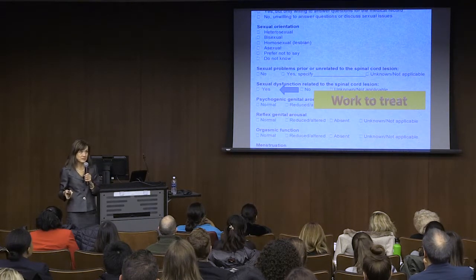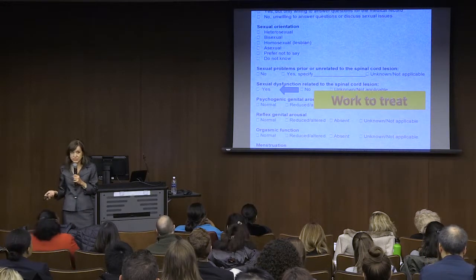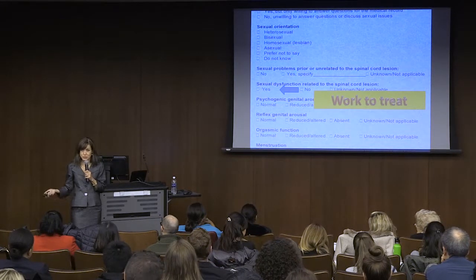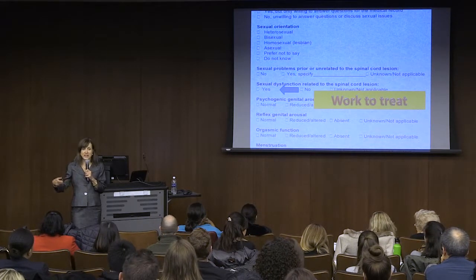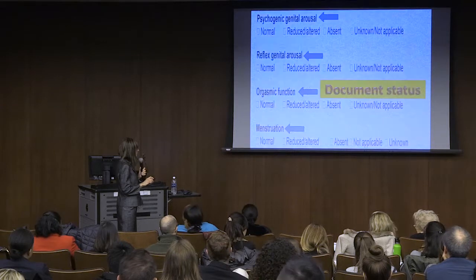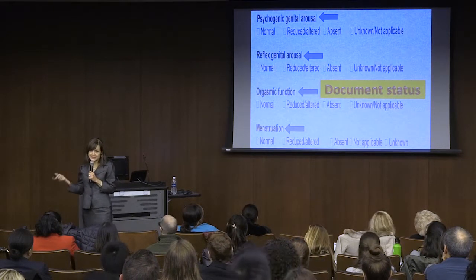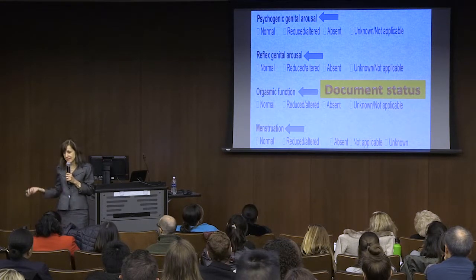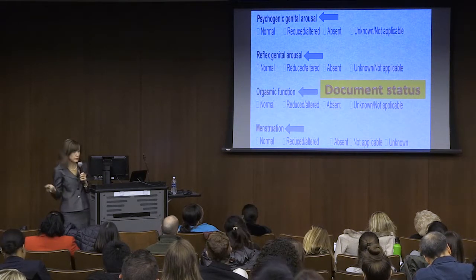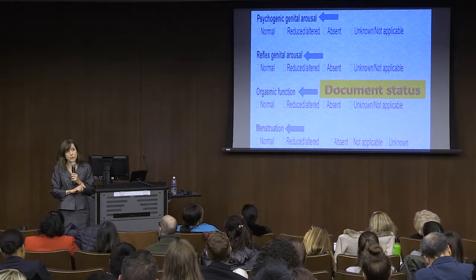Then we go to what we've been talking about more: sexual dysfunction related to the spinal cord lesion. If there's a problem and they say it's a dysfunction—as opposed to just a change in how they're functioning—then you're hopefully going to work to treat it. Those are the people we want to help. The last areas document the autonomic standards status: do they have psychogenic arousal, reflex arousal, orgasms, and in women, do they have periods?